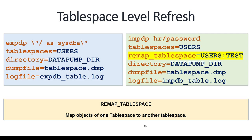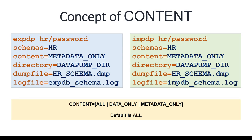Tablespace-level refresh lets you copy data for all objects in a given tablespace. Using REMAP_TABLESPACE, you can redirect objects from one tablespace to another during import — for example, REMAP_TABLESPACE=USERS:TEST will migrate all objects from the USERS tablespace into the TEST tablespace. This clause is optional; remove it if you want to keep the same tablespace.